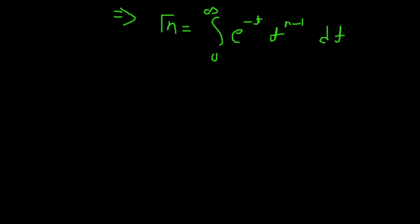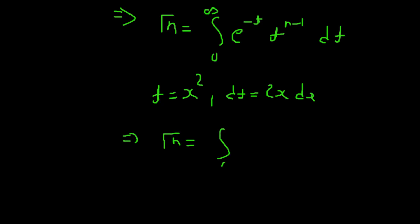Here we are going to put t equals x squared and dt equals 2x dx. On putting this value, gamma(n) becomes the integral from 0 to infinity of e to the power minus x squared. When we multiply with n, the power becomes 2n minus 2, and dt becomes 2x dx.